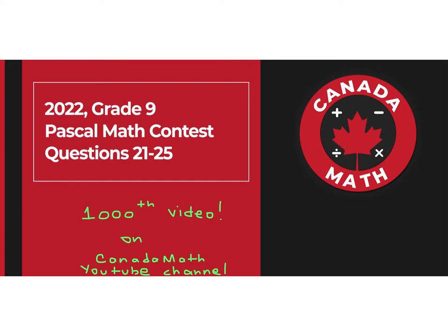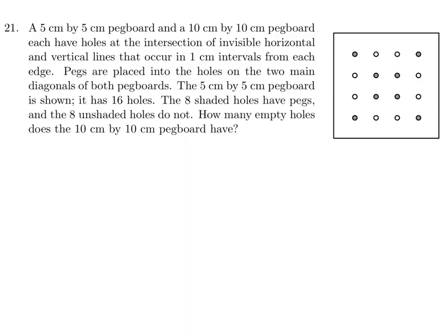2022 Grade 9 Pascal Math Contest, Questions 21 through 25. A 5x5 pegboard and a 10x10 pegboard each have holes at the intersection of invisible horizontal and vertical lines that occur in 1cm intervals from each edge. The pegs are placed into the holes on the two main diagonals of both pegboards. The 5x5cm pegboard has 16 holes: 8 shaded holes have pegs and 8 unshaded holes do not. How many empty holes does the 10x10 pegboard have?